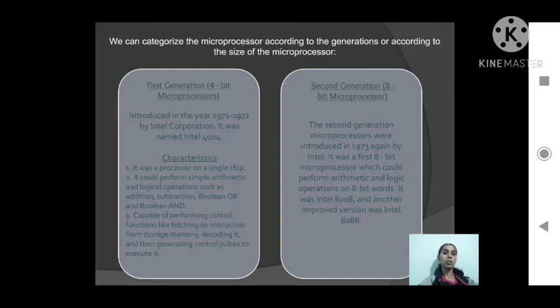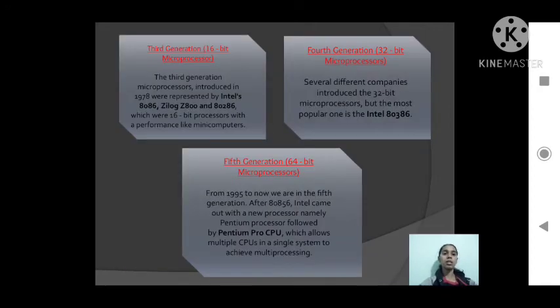The second generation microprocessors were introduced in 1973 by Intel. It was the first 8-bit microprocessor which could perform arithmetic and logic operations on 8-bit words. The third generation was a 16-bit processor, the fourth generation was a 32-bit processor, and the fifth generation was a 64-bit processor.